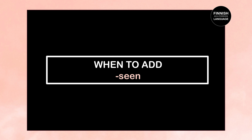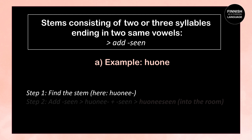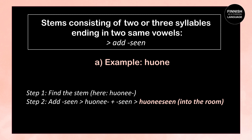The third ending is the -seen ending. When we have a stem of two or three syllables ending in two same vowels, we add -seen. For example: huone, which means room. The stem is huonee (with double e). We add -seen: huonee + seen = huoneeseen, which means into the room.